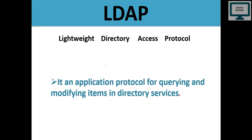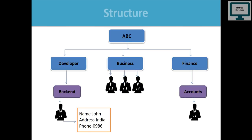Let me show you what kind of structure this is. Imagine ABC is my company name — an IT company. In this IT company we have different branches: one is the Developer team, one is the Business team, and another is the Finance team. In the Developer side we also have sub-departments like Backend and Full Stack. In Backend we have developers — for example, one named Sean whose address is India and phone number is listed. Business and Finance teams also have their own people and sub-branches like Accounts. This is the overall structure of LDAP.